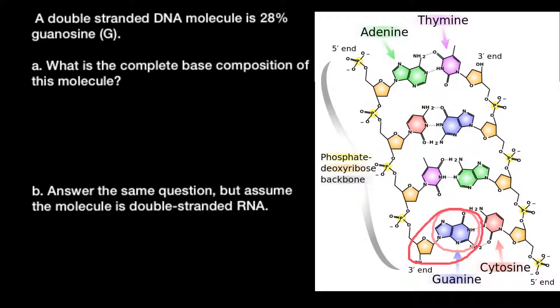Guanine base pairs with cytosine. Because we know that guanine makes 28%, that automatically means cytosine also makes 28%. Because these two bases together make 56%, that means the other two bases make the rest, 44%.